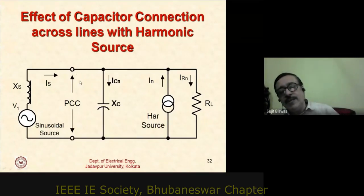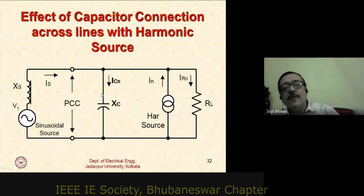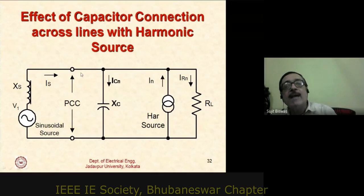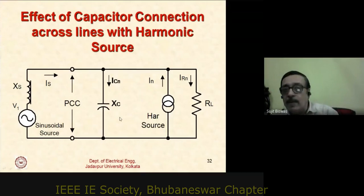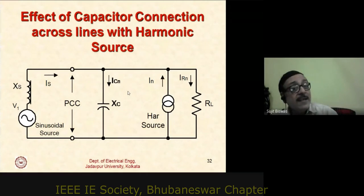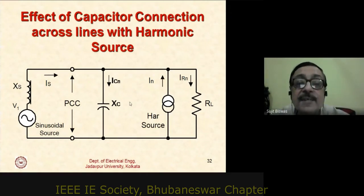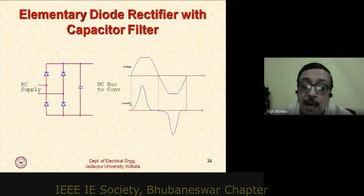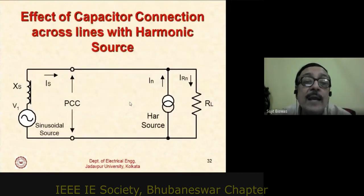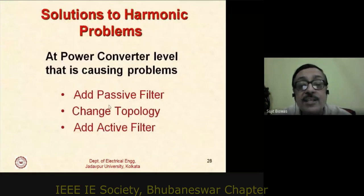The first solution is simply to remove the capacitor — this stops resonances and brings harmonic currents down. This has been confirmed in practice in industry. However, there is still a fundamental displacement angle to correct, and that cannot be done with a simple capacitor — it must be handled through electronic control.